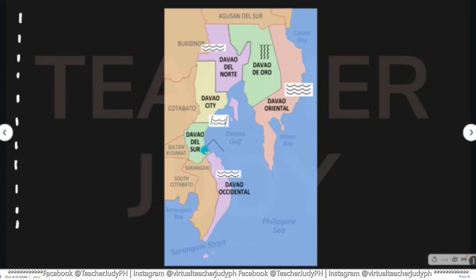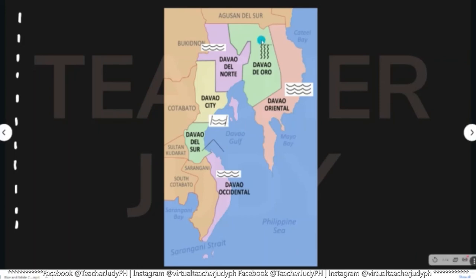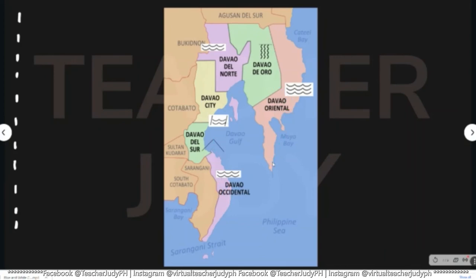Sunod, ang Davao del Sur, makita nato nga naay forma or simbolo sa bukid tungod kay dinhi man nato makita ang Bukid sa Apo or Mount Apo. Ang Davao del Norte, makita nato nga naay simbolo sa dagat tungod kay dinhi man naasa ang Island Garden City of Samal. Sa Davao de Oro, makita nato nga naay simbolo sa busay — ang Mako Mainit Falls. Sa Davao Oriental, adunay simbolo sa kadagatan tungod kay makita man dinhi ang Dahican Beach. Daghan ang anyong lupa o anyong tubig ang makita sa Davao region tungod kay dato ang Davao region sa anyong lupa o anyong tubig.